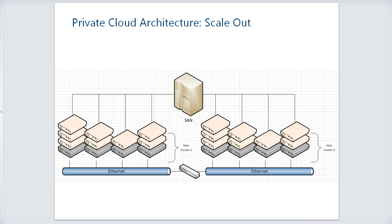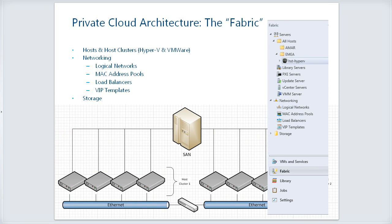All of this taken together is what we call the fabric. The fabric is the hosts and host clusters — whether running Hyper-V or VMware — the networking, which includes logical networks, MAC address pools, load balancers, VIP templates, and so on, as well as storage. The idea is that you drop virtual machines onto the fabric.